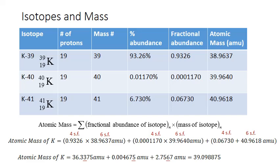This final calculation was addition, so I follow the addition rule for significant figures and limit my answer based on the least number of decimal places of the terms I added together. That applies to the first term, which was limited at the second decimal place. So I round my final answer to the second decimal place: 39.098875 rounds up to 39.10 AMU.